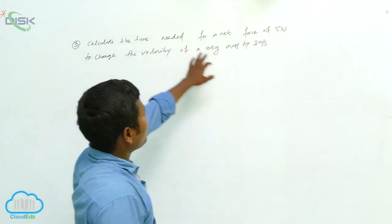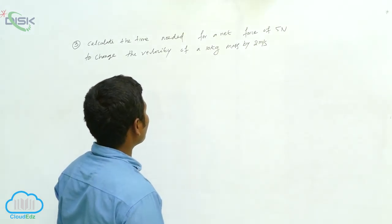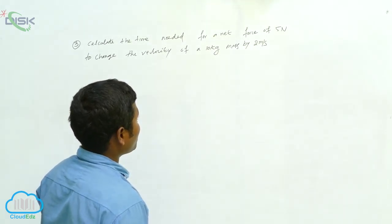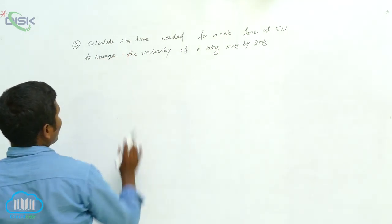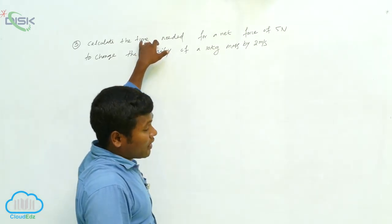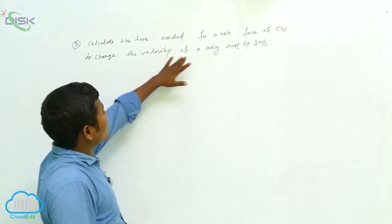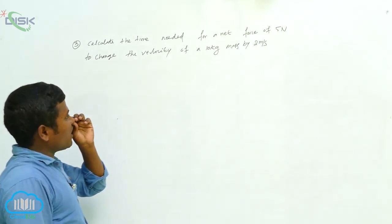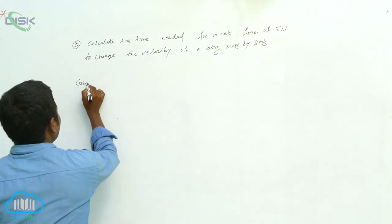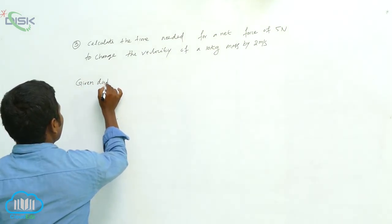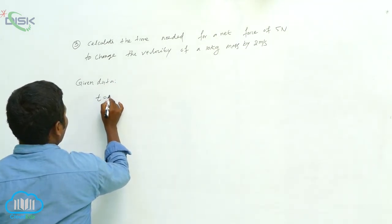Problem: Calculate the time needed for a net force of 5 Newtons to change the velocity of a 10 kg mass by 2 meters per second. What are the given data? Time t is what we are asking to find.